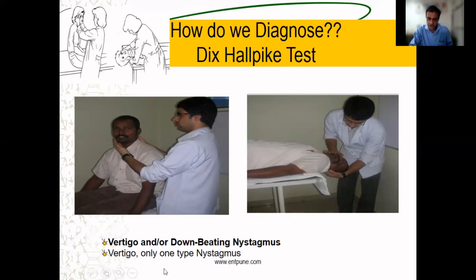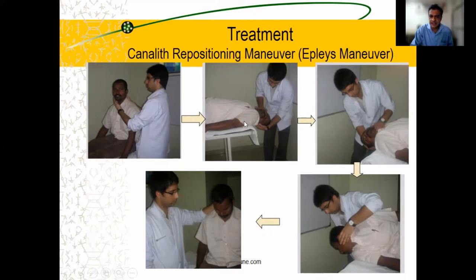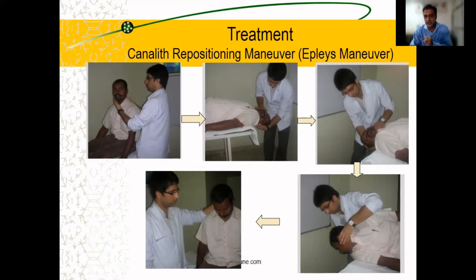The patient should get some vertigo or nystagmus when we bring them into that position. What do we do? It is a simple Epley's maneuver. There are two to three maneuvers that can be done by the ENT surgeon, but Epley's maneuver is the most commonly performed by tilting the head in a specific position.